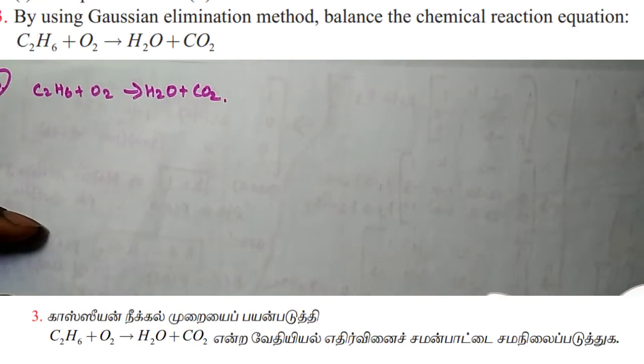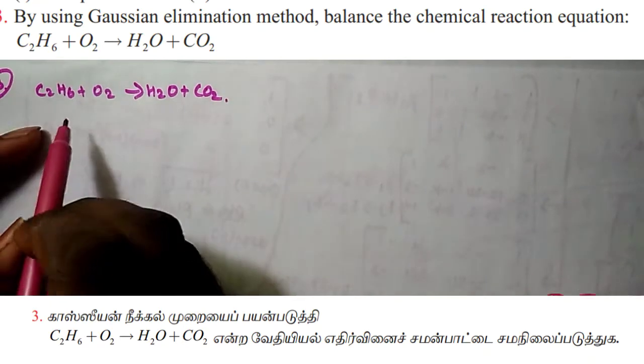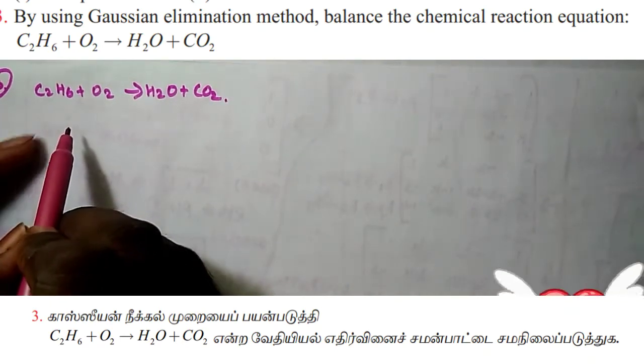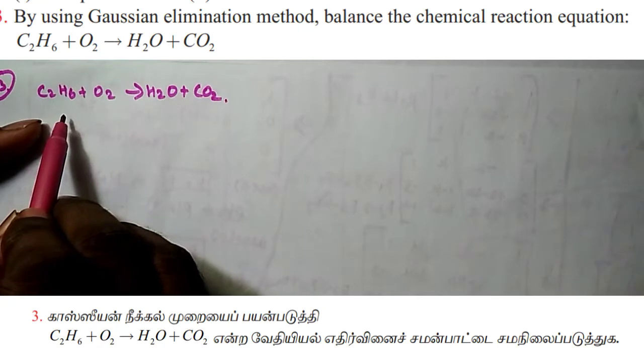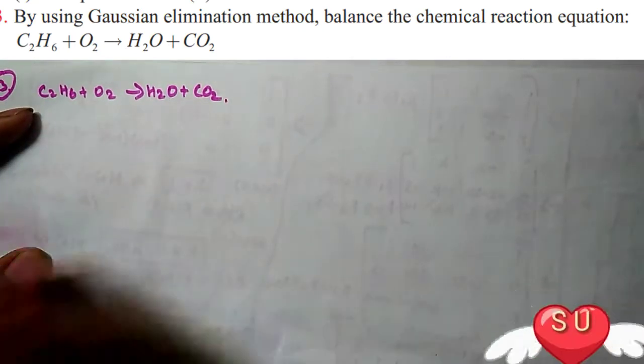Hi friends, Vanaika. This is example 1.7 from the important sums. We will use the Gaussian elimination method to balance the chemical reaction equation.